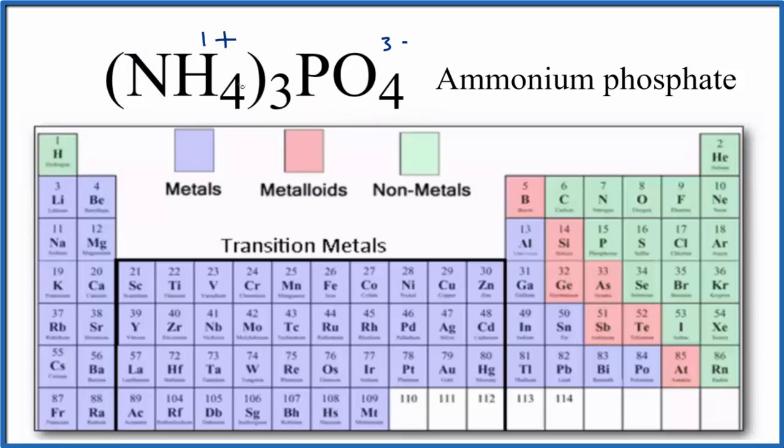Because we have positive ions and negative ions, they attract, and that forms an ionic bond. So ammonium phosphate, NH43PO4, it's an ionic compound.